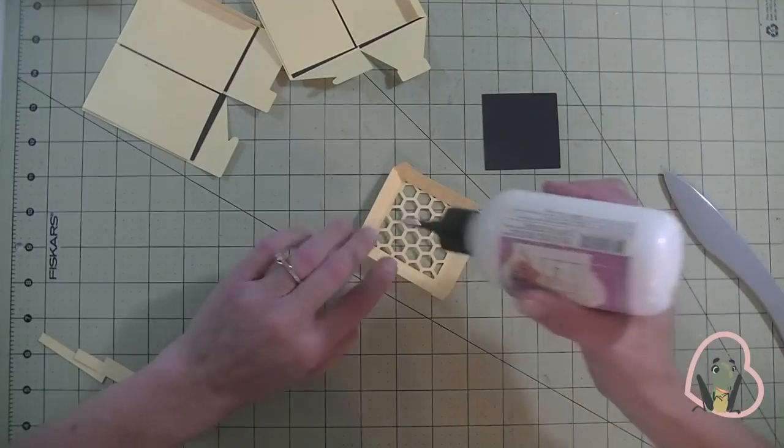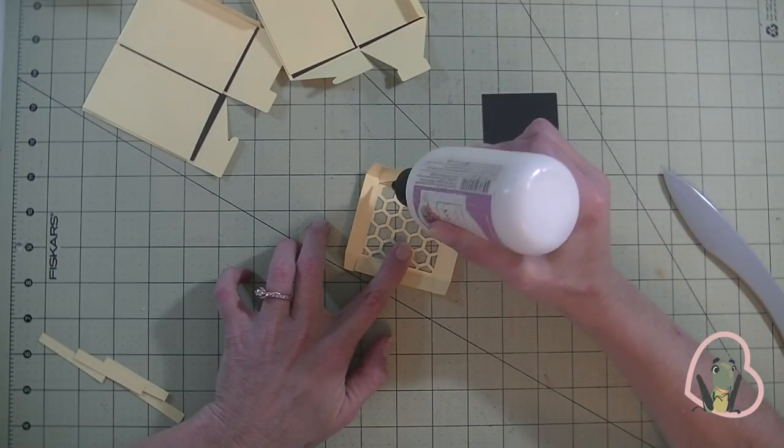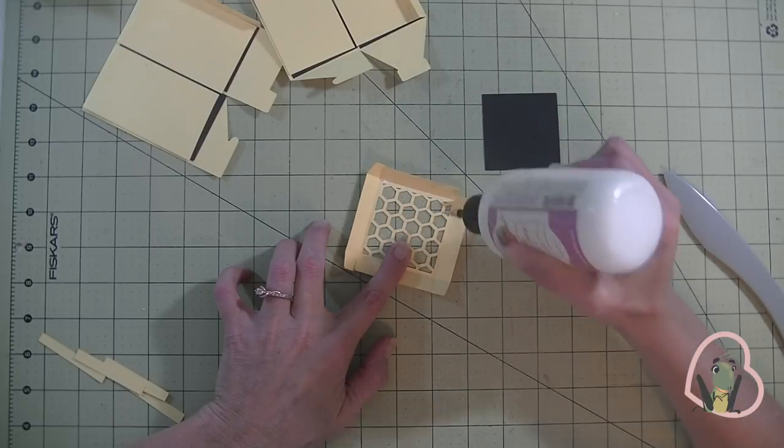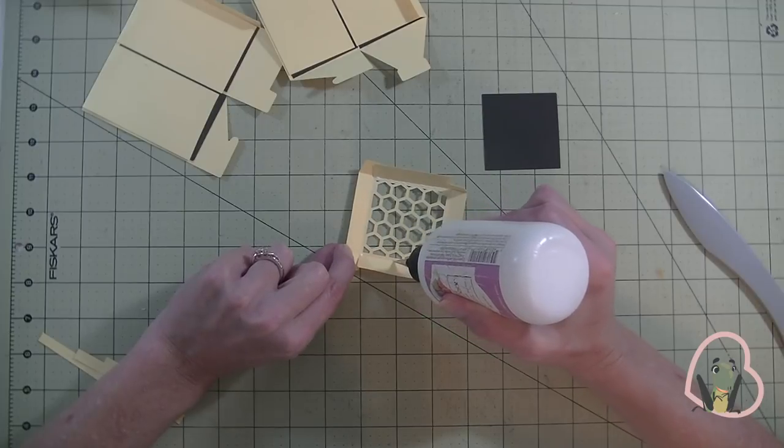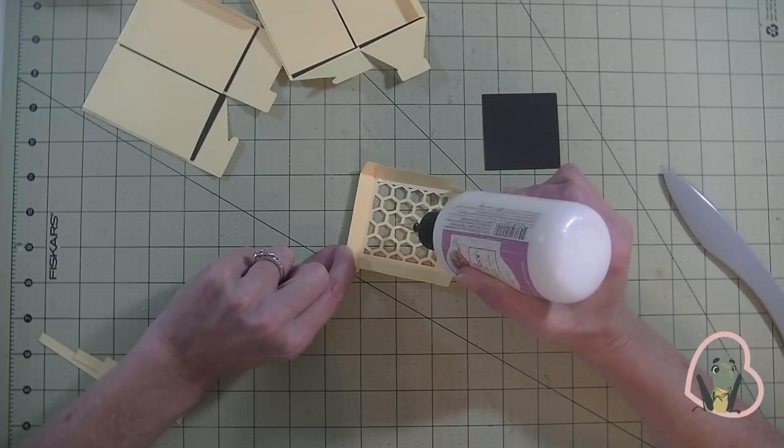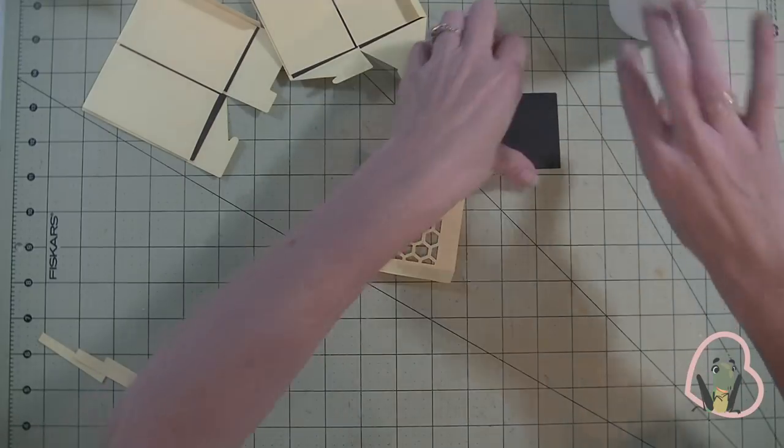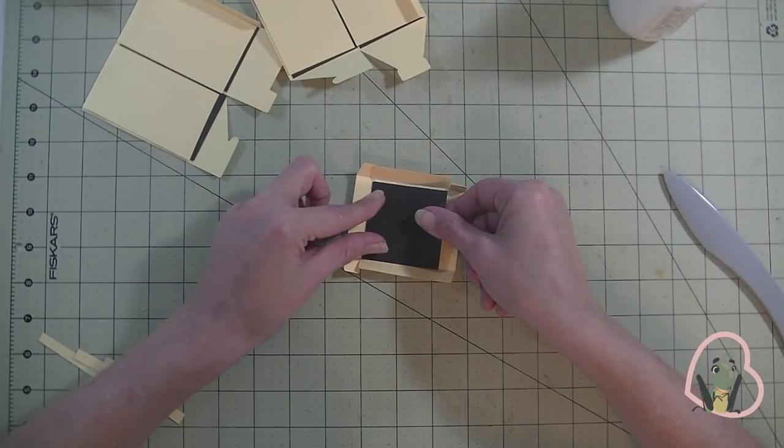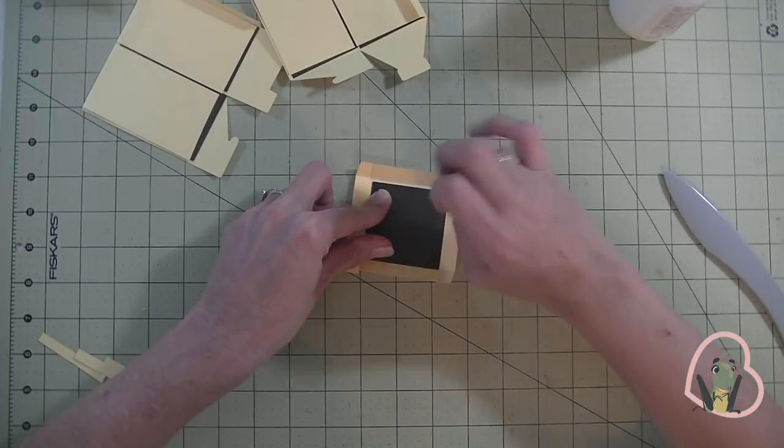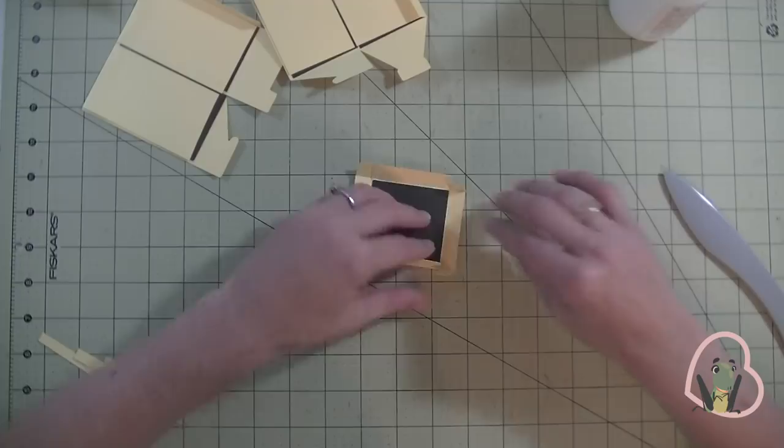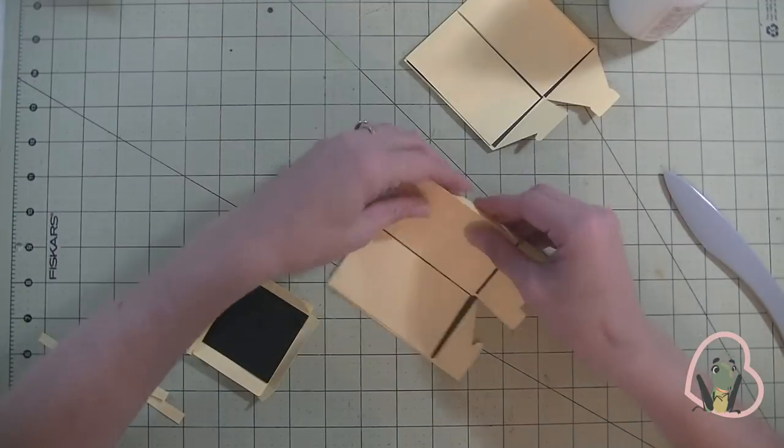And now I am going to do the same thing for the lid. Just kind of work your way around the outside of it first. And just a few dollops of glue here and there to kind of help hold the black piece in. I am going to plop that in there. Get rid of all the extra glue. And again just reinforce the flaps on the side. Alright, we are good to go. Now we can assemble.